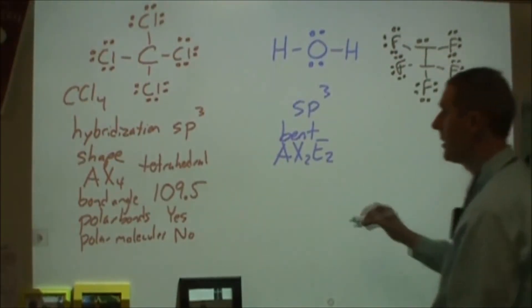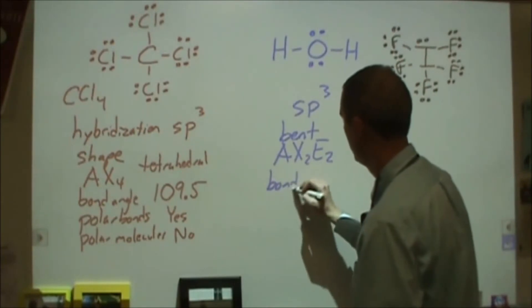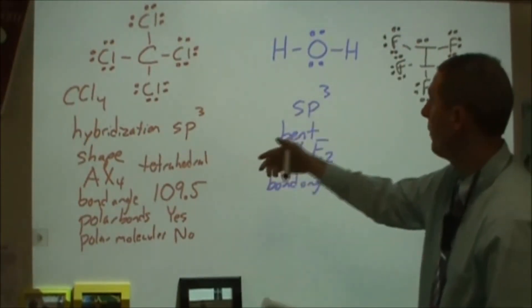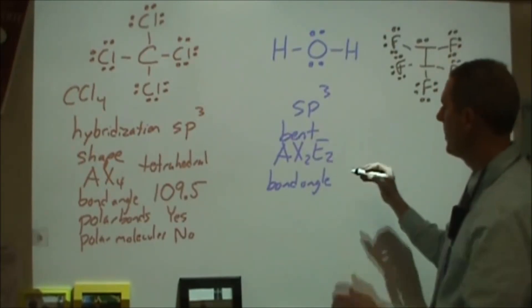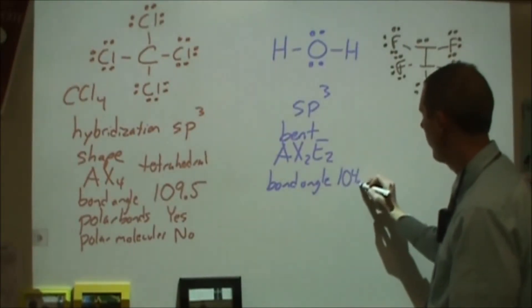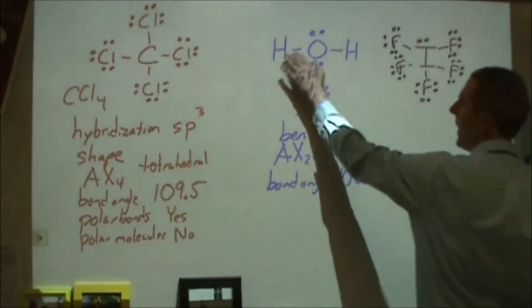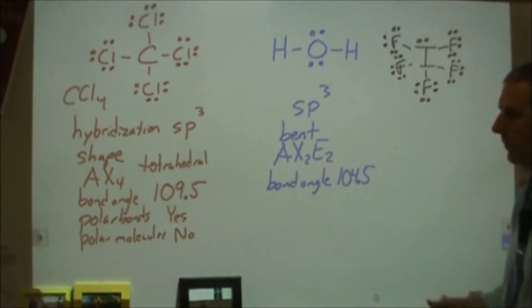And then for our bond angle, here we would have the 109.5, but it's going to be a little more constrained than that, so we're looking around 104.5 or 105, and we would have to check what the specific atoms come out to for this particular thing, but somewhere in that vicinity would be fine.